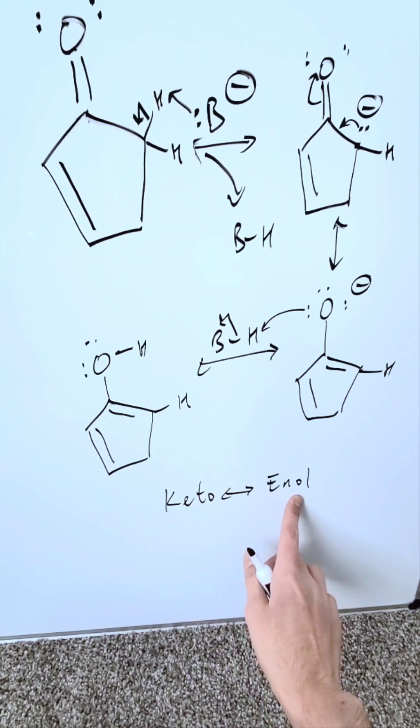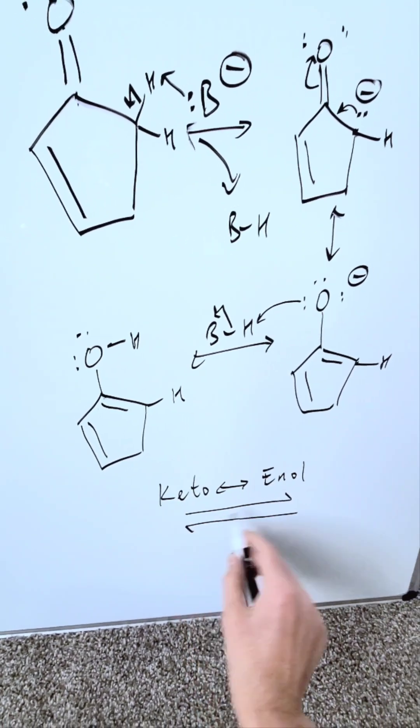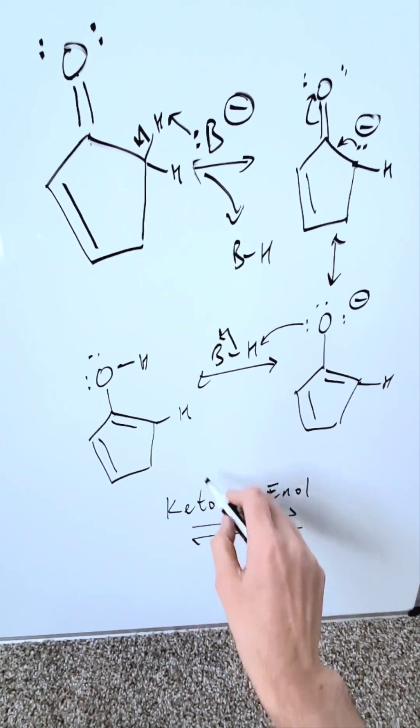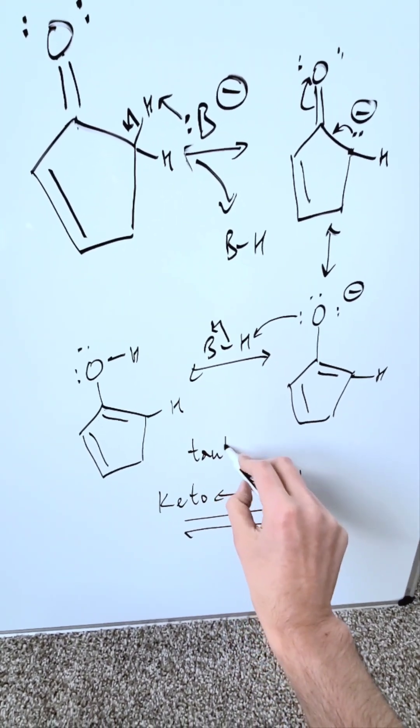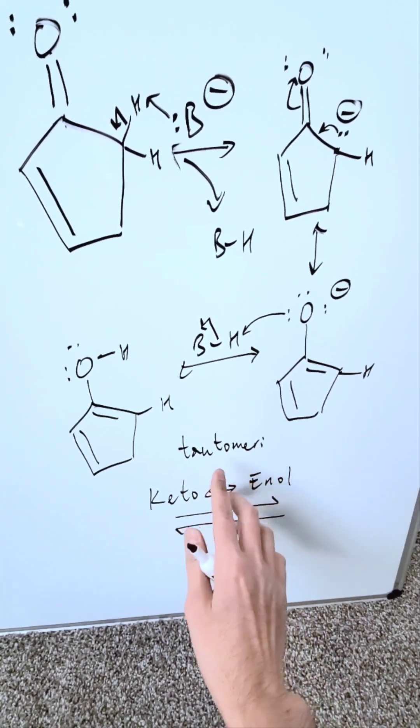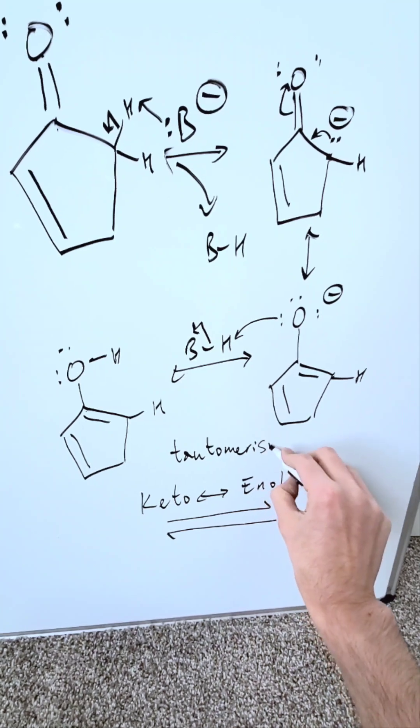We are going here from a keto to enol in this particular case. But it can easily go back in that reverse direction. You're seeing over here keto-enol tautomerism. And you know what this is. It is a form of a mixture or interconversion from one isomer to another. Tautomerism is what it's called.